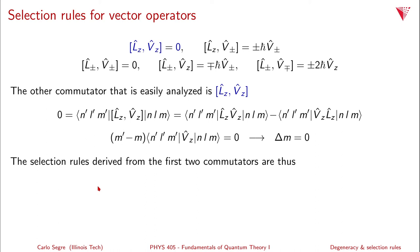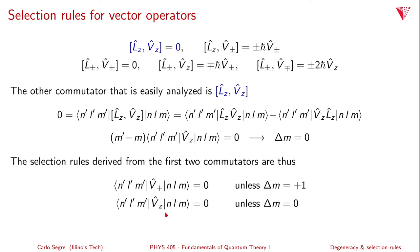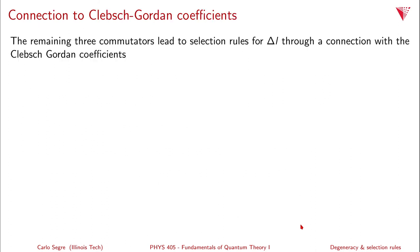So the selection rules from the first two commutators are: the matrix element of V plus equals zero unless delta M equals plus 1; the matrix element of Vz equals zero unless delta M equals zero; and the matrix element of V minus equals zero unless delta M equals minus 1. The remaining three commutators lead to selection rules for delta L through a connection with the Clebsch-Gordon coefficients.